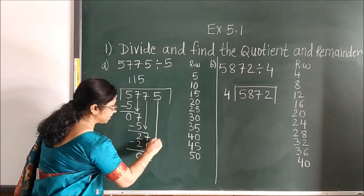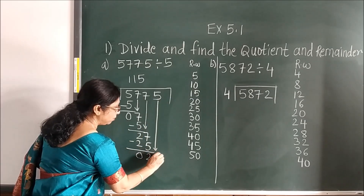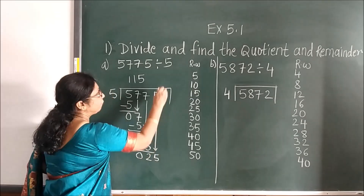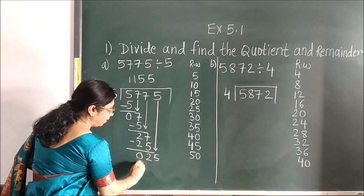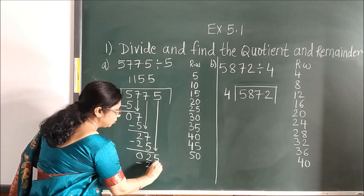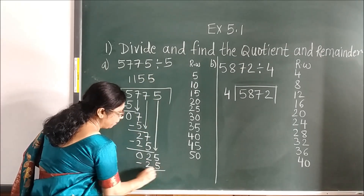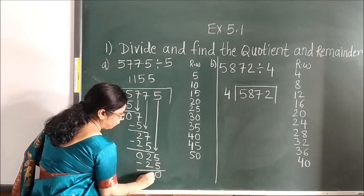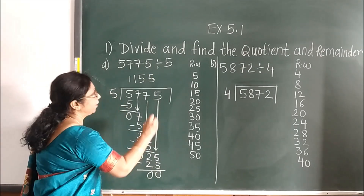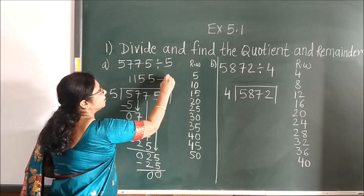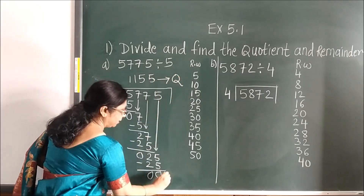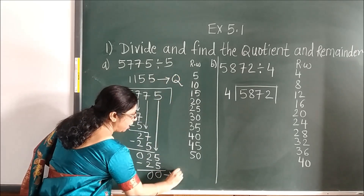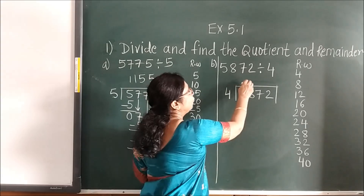Bring the next number down. 5 fives are 25. After solving, this is the quotient and this is the remainder.